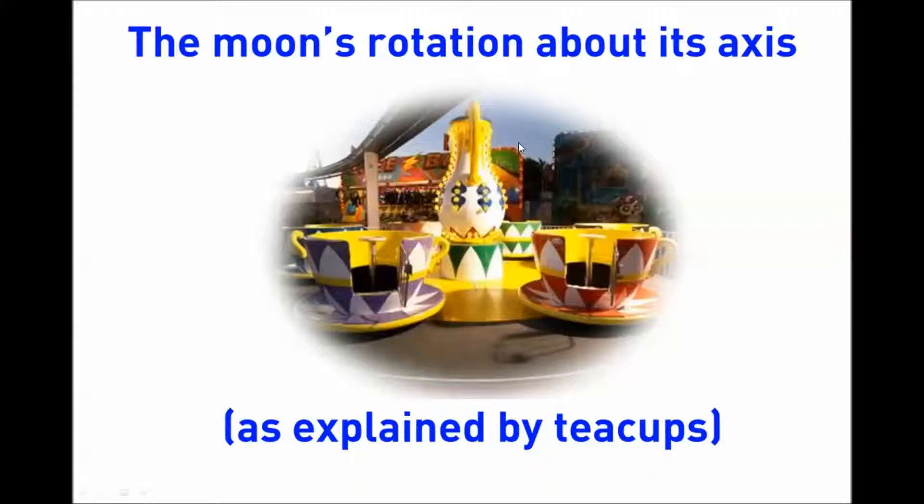In the video I'm going to reference a central axis, that's this spout right here. And then around the axis, these teacups have their own little axis, that's this steering wheel here. If you grab the steering wheel, it locks the teacup upon its axis.